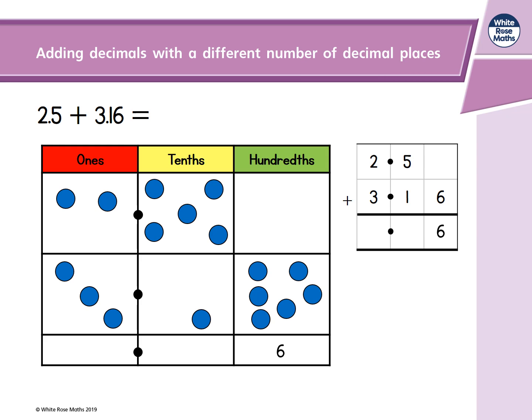Next let's look at the tenths. 5 tenths add 1 tenth. This is equal to 6 tenths. And finally the ones column. 2 ones add 3 ones is equal to 5 ones. So 2.5 add 3.16 is equal to 5.66.